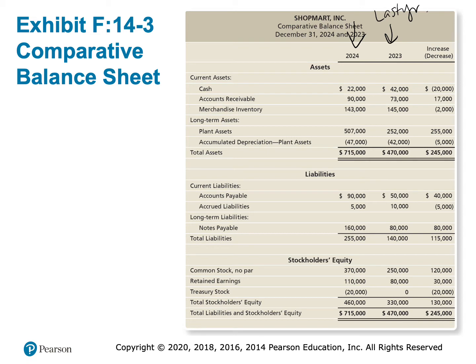I want to point out right now that last year cash was $42,000 and this year it's $22,000, so we know that cash has declined by $20,000. By the time we finish the statement of cash flows, we are going to get the answer that cash declined by $20,000. If we don't get that it declined by $20,000, we'll know we made a mistake somewhere. I've posted these in your notes so that you have them with you.